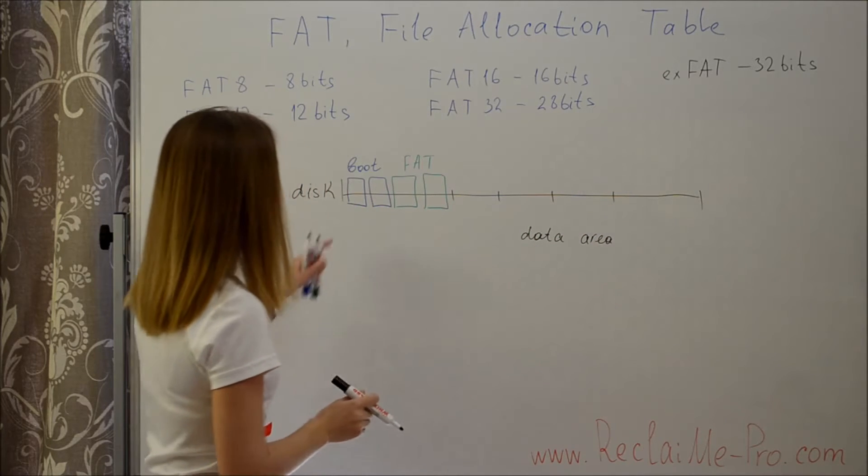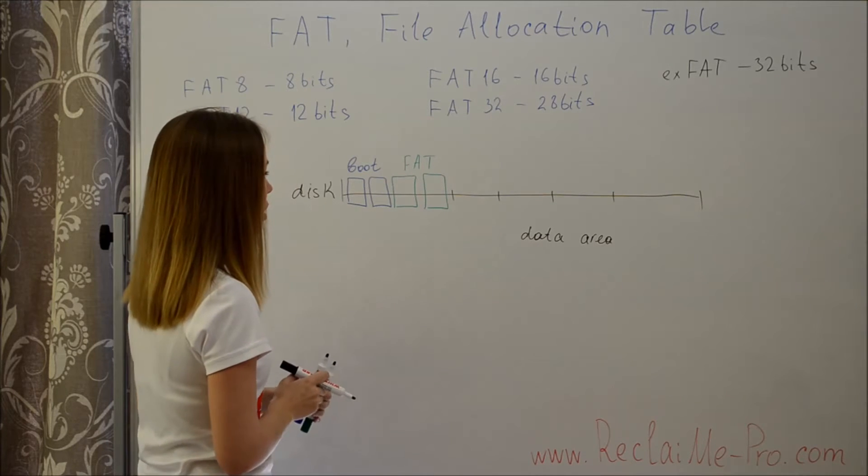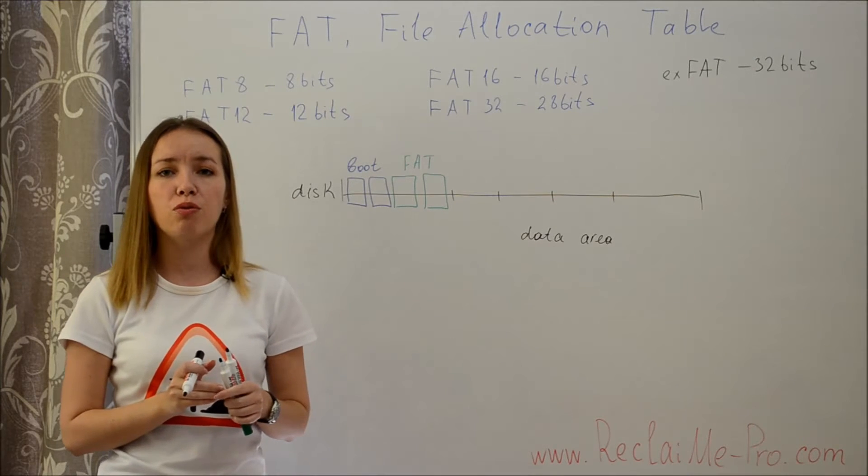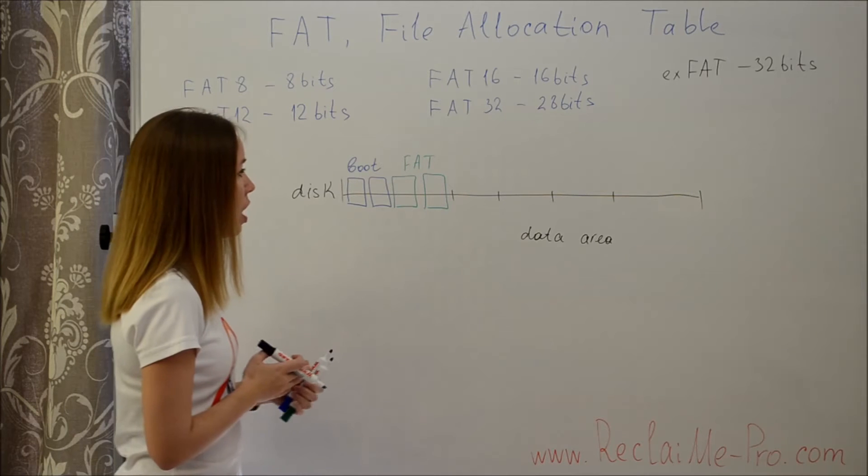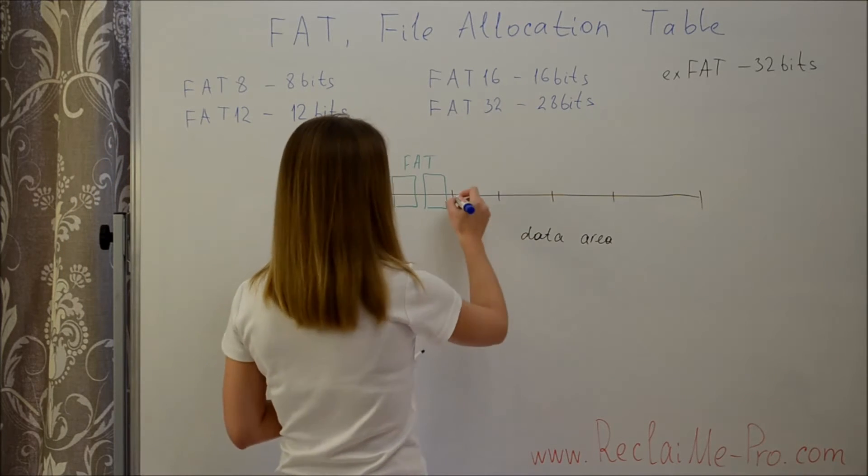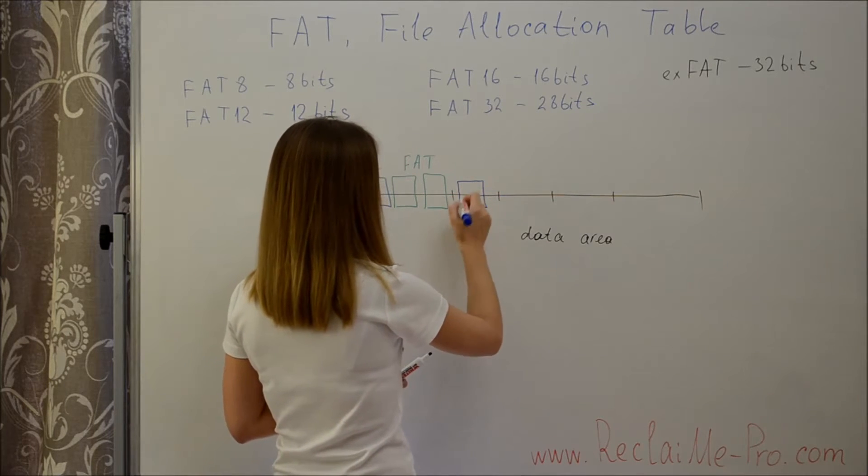It can be one or two boot sectors depending on FAT versions, and it can be one or several, typically two but up to four FAT tables. Root directory is usually stored in the first cluster on the data area.